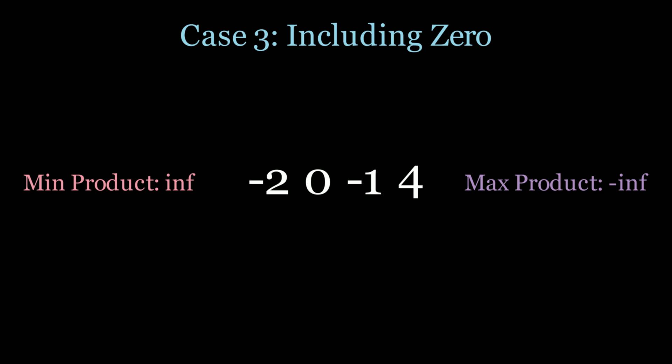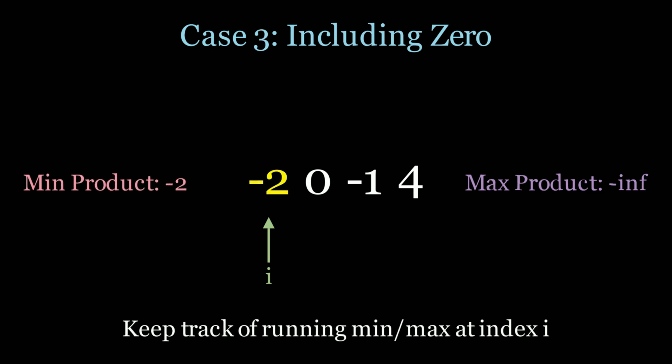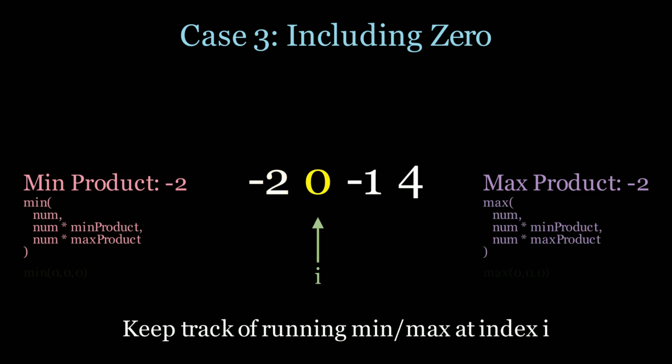For case number 3, we look at zero. For zeros it's really important that we somehow reset our algorithm. We start with negative 2 as the min and max products, then scan zero. Zero makes the product of the number times min product and number times max product both zero. So we take the minimum and maximum of 0, 0, 0 — which is just zero. This is how we deal with the zero case, and it lets us use the same exact code and implementation.